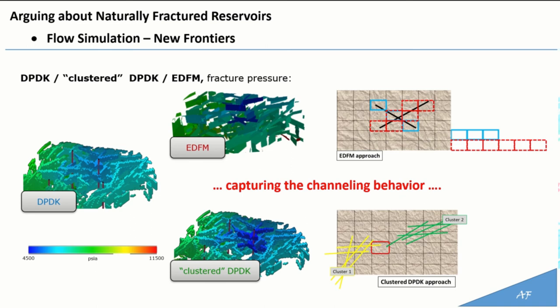The clustered DPDK approach provides results similar to the embedded discrete fracture modeling approach in terms of pressure distribution in the fractures, and both approaches are better at capturing actual fracture connectivity with respect to standard ODA-based DPDK. In fact, the fracture permeability description at grid model scale is more effective in capturing the channeling behavior. However, the uncertainties about fracture connectivity are very high, and it is very difficult to have reliable a priori knowledge — meaning before production history.